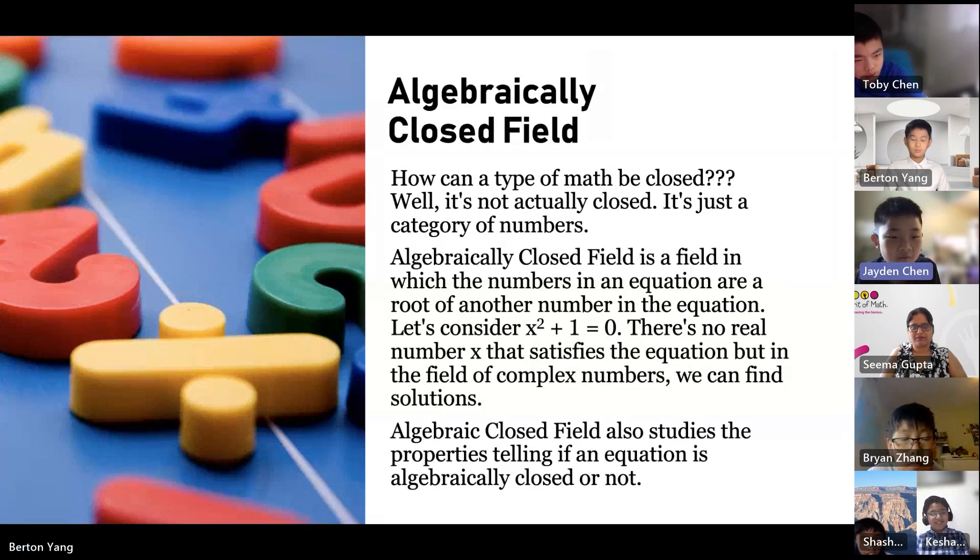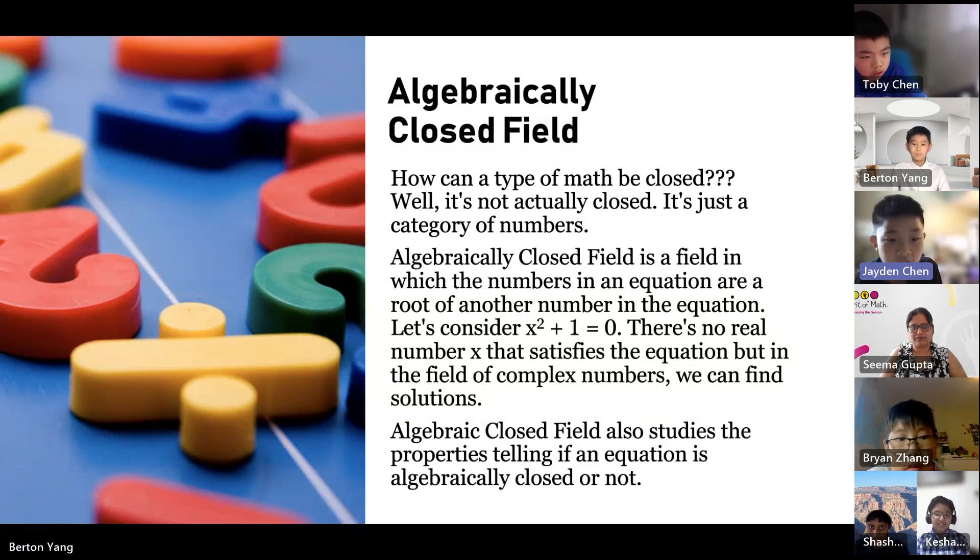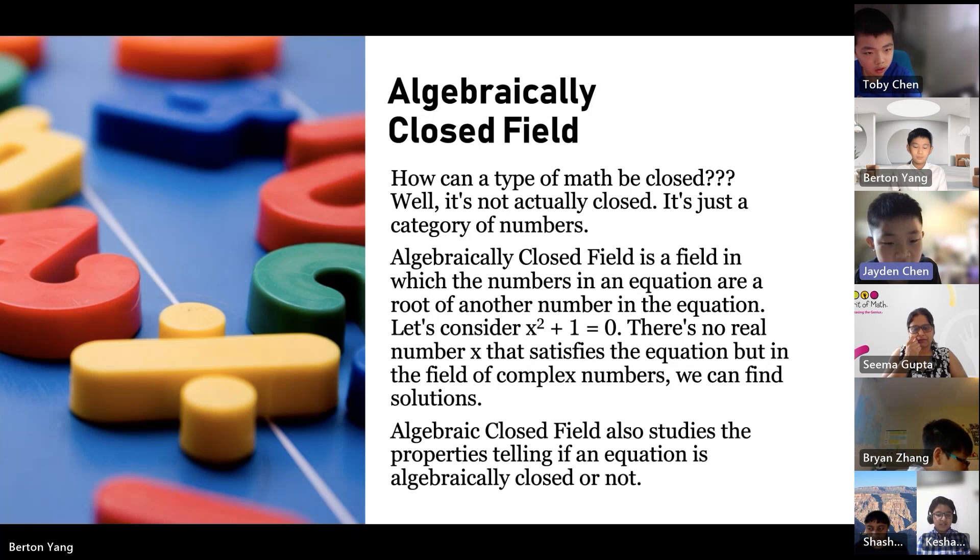Algebraically closed field. Well, how can a type of math be closed? Well, it's not actually closed. It's just a category of numbers. Algebraically closed field is a field in which the numbers in an equation are a root of another number in the equation. Let's consider x squared plus 1 equals 0. There's no real number x that satisfies the equation, but in the field of complex numbers, we can find solutions. Algebraically closed field also studies the properties telling if an equation is algebraically closed or not.